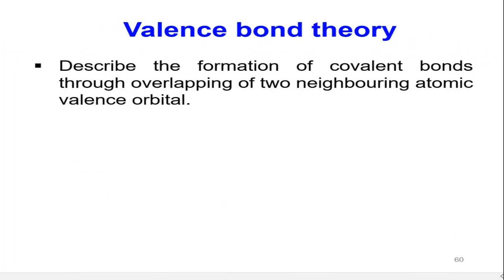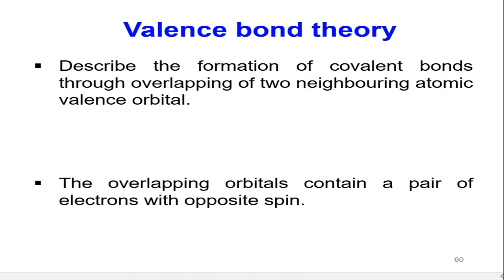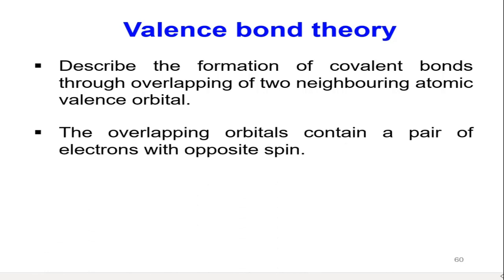Valence bond theory is a model used to describe the formation of covalent bonds through overlapping of two neighboring atomic valence orbitals. According to valence bond theory, the two neighboring atoms should have unpaired electrons in their valence orbitals, so the overlapping orbitals contain a pair of electrons with opposite spin.